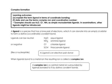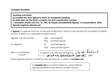A ligand is an electron pair donor. To differentiate a ligand from a nucleophile, you should also add to your definition that a ligand is an electron pair donor which forms dative covalent bonds with a metal ion.